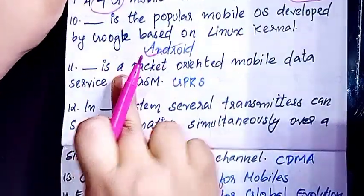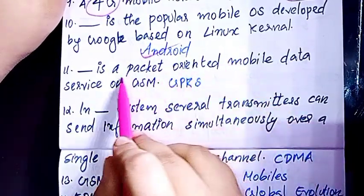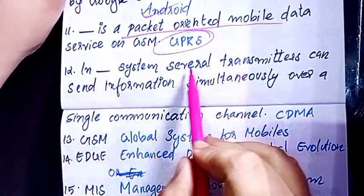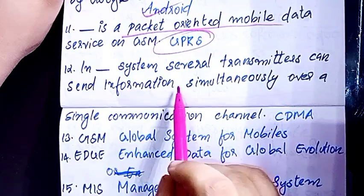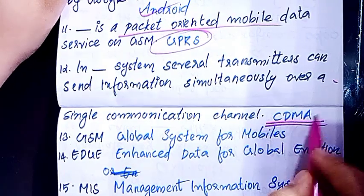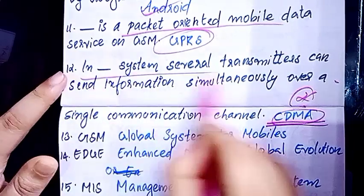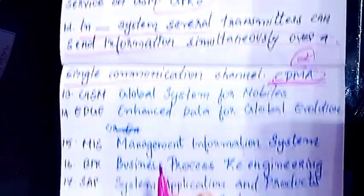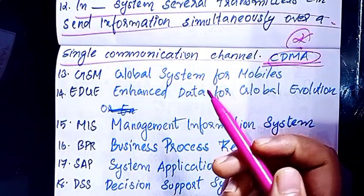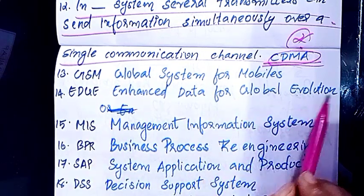Dash is a popular mobile OS developed by Google based on Linux kernel — Android. Dash is a packet-oriented mobile data service on GSM — that is GPRS. In this system several transmitters can send information simultaneously over a single communication channel — CDM. GSM: Global System for Mobiles.